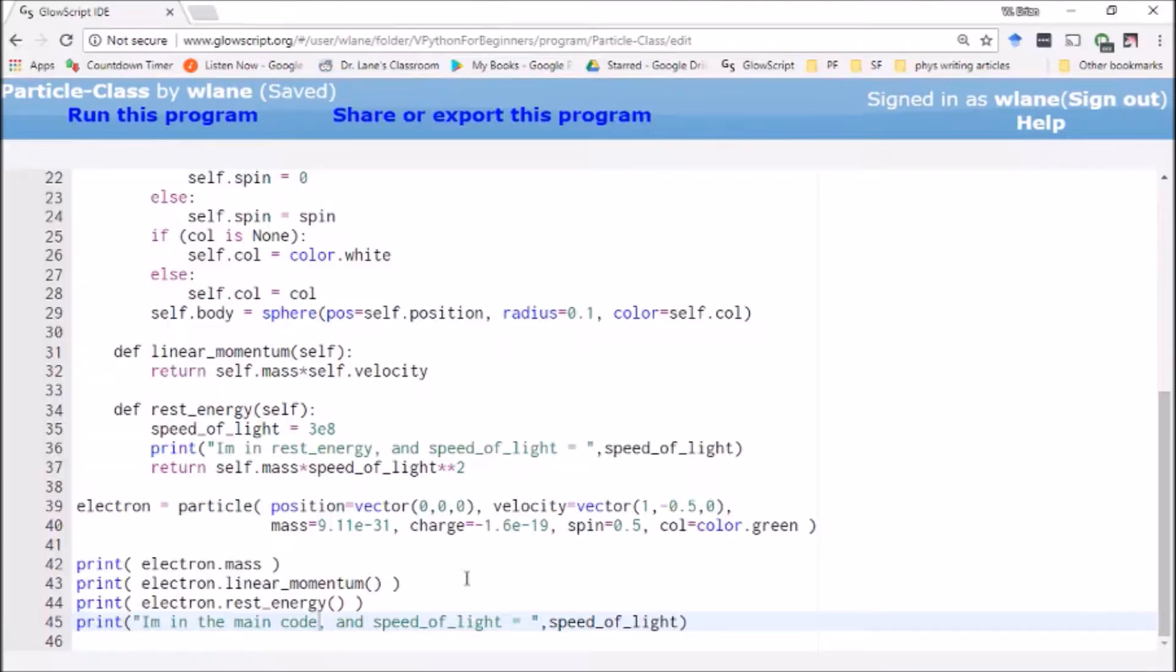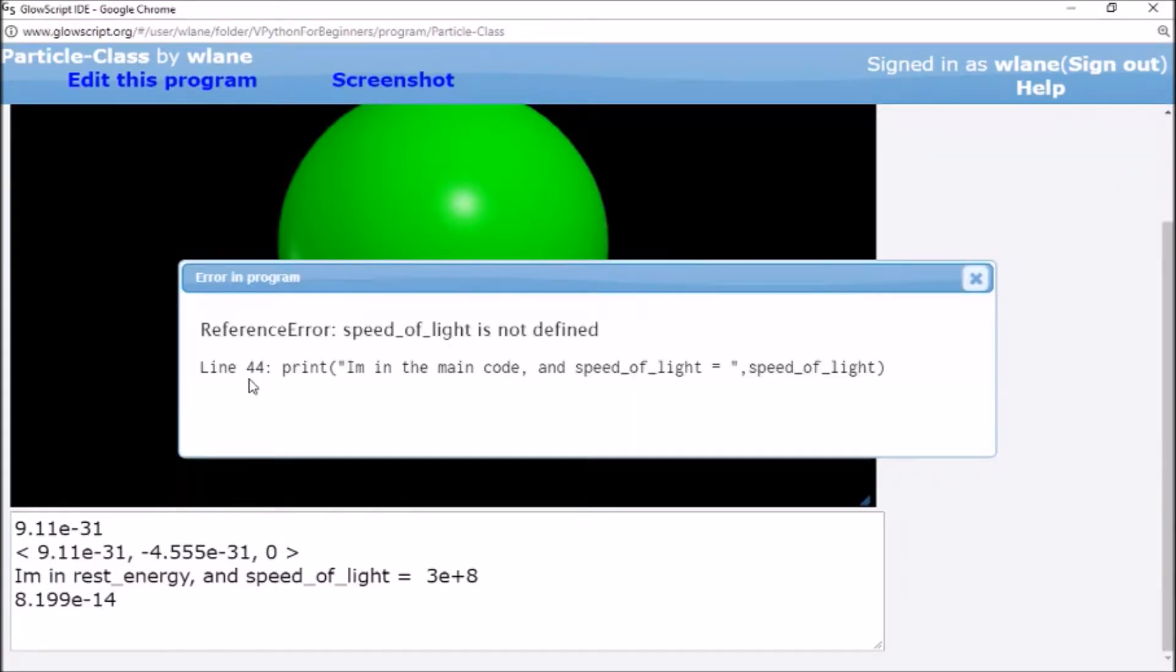But the problem is because I defined speed of light inside this function, as soon as the code leaves this chunk of a function here, it's going to forget what it had stored in speed of light. It's not going to keep that in memory anymore. It's going to get rid of it because it's done with this function. And so when I make this call in line 44 to speed of light, it doesn't know what that value is. It doesn't remember storing it there. It's got a very compartmentalized memory.